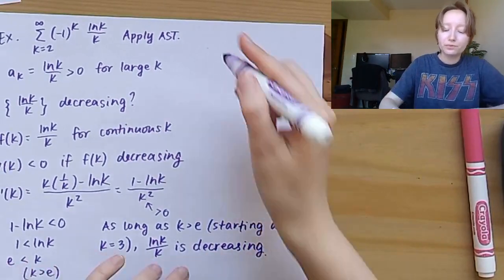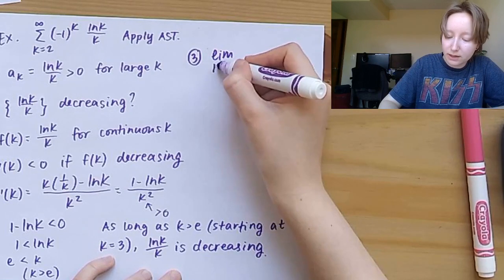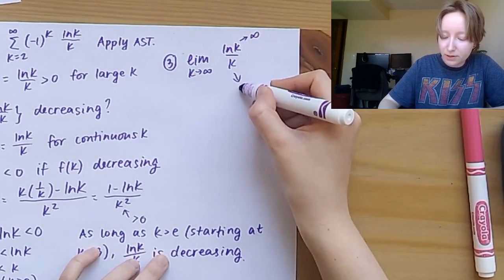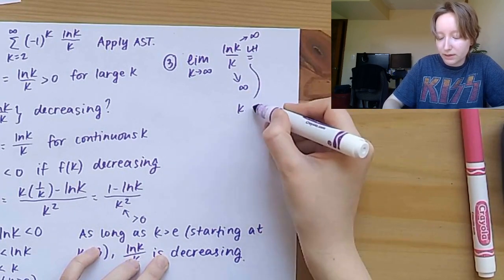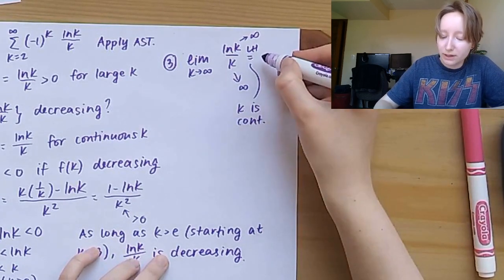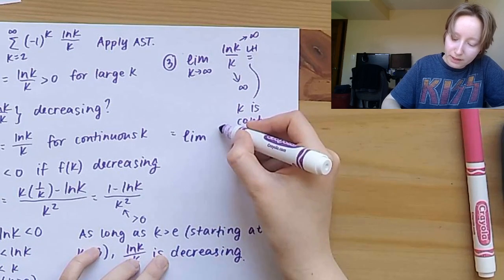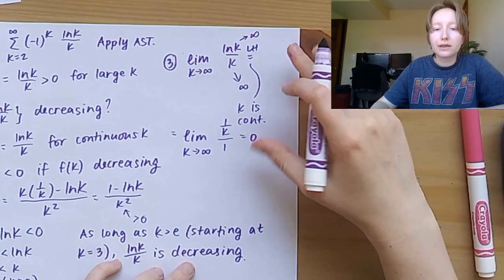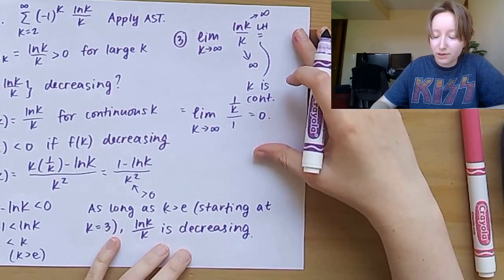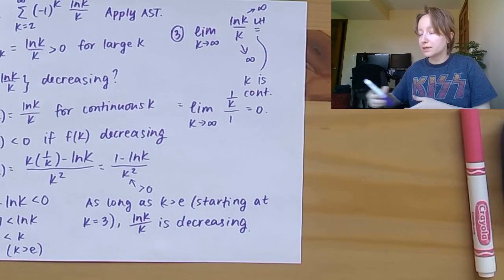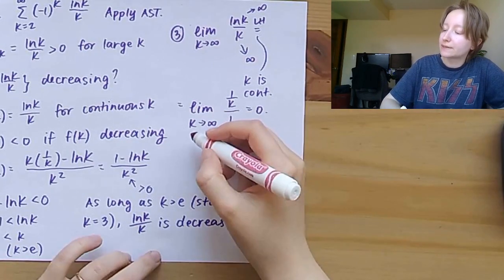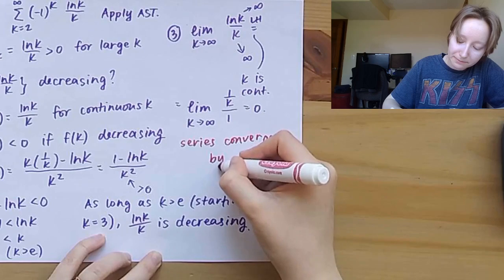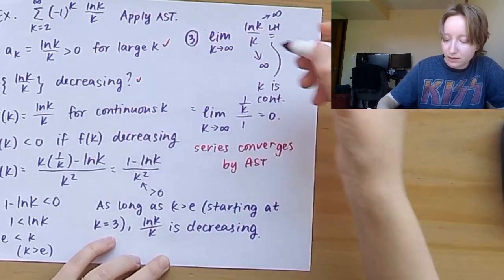For condition 3, I take the limit as k → ∞ of ln(k)/k. This is ∞/∞, so I apply L'Hôpital's rule (treating k as continuous): the limit becomes (1/k)/1 = 1/k → 0. So the limit of a_k equals 0. All three conditions hold, so the series converges by the alternating series test.